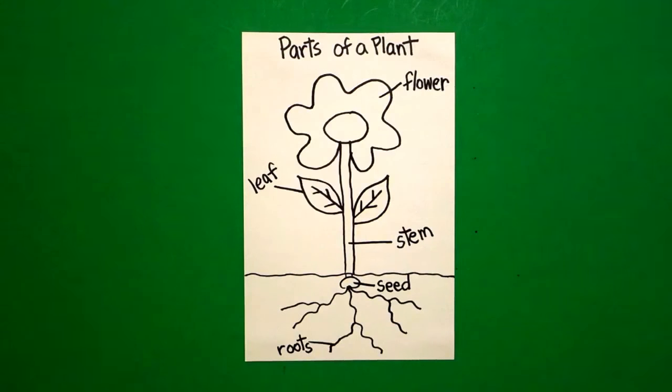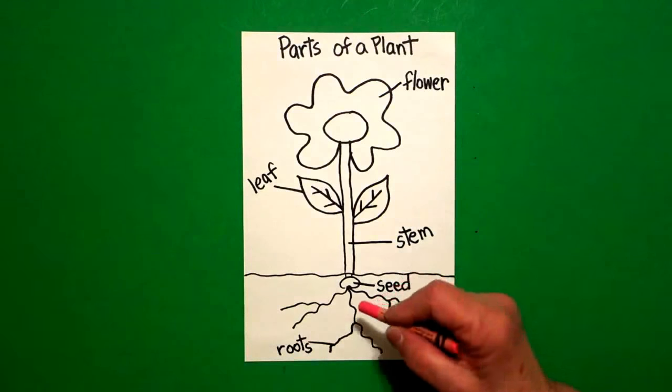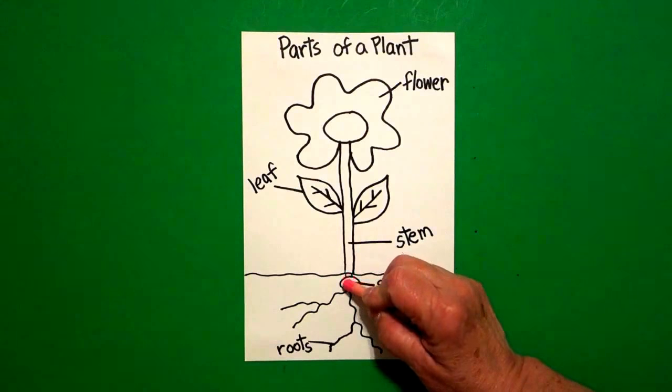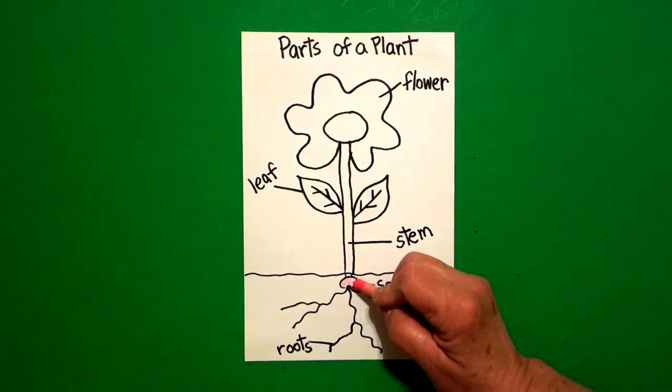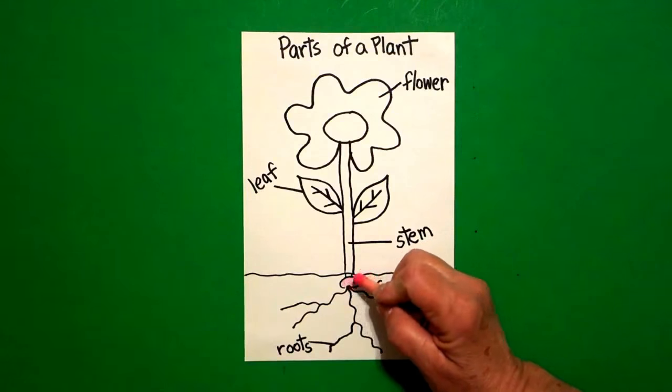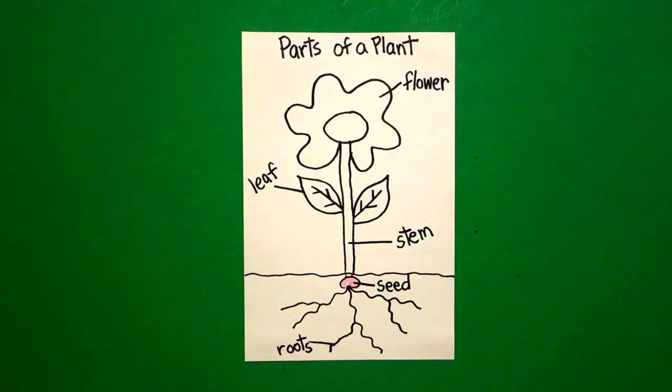Okay, let's see how we're going to color this in. Okay, the first thing I'm going to start with is my little seed. And I'm going to make this pink. You can make it yellow, you can make it orange, you can really make it any color you want. I just want everybody to know that that's where everything starts from. So I made mine pink.